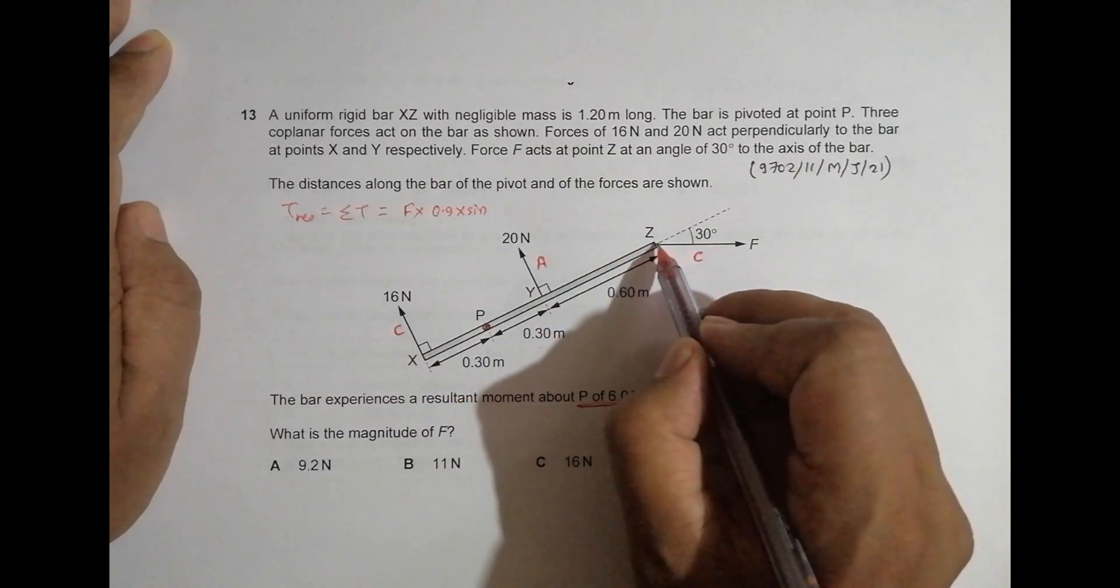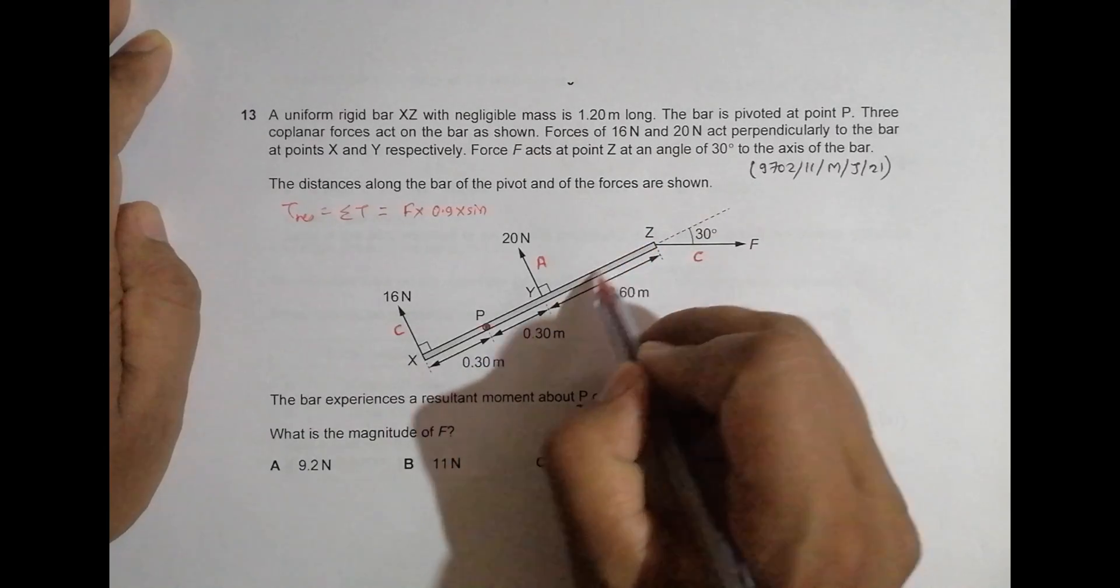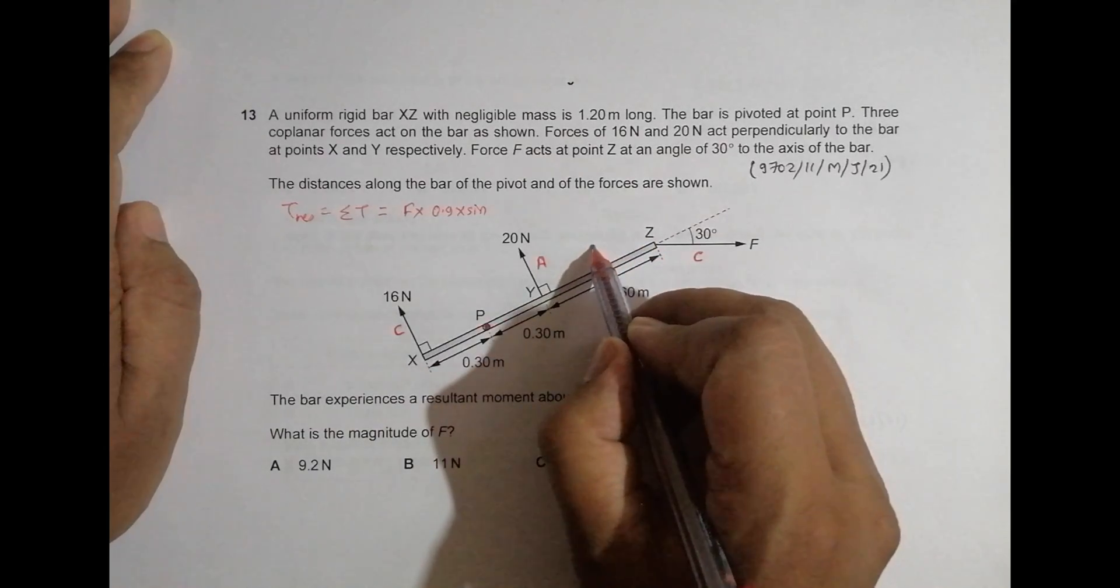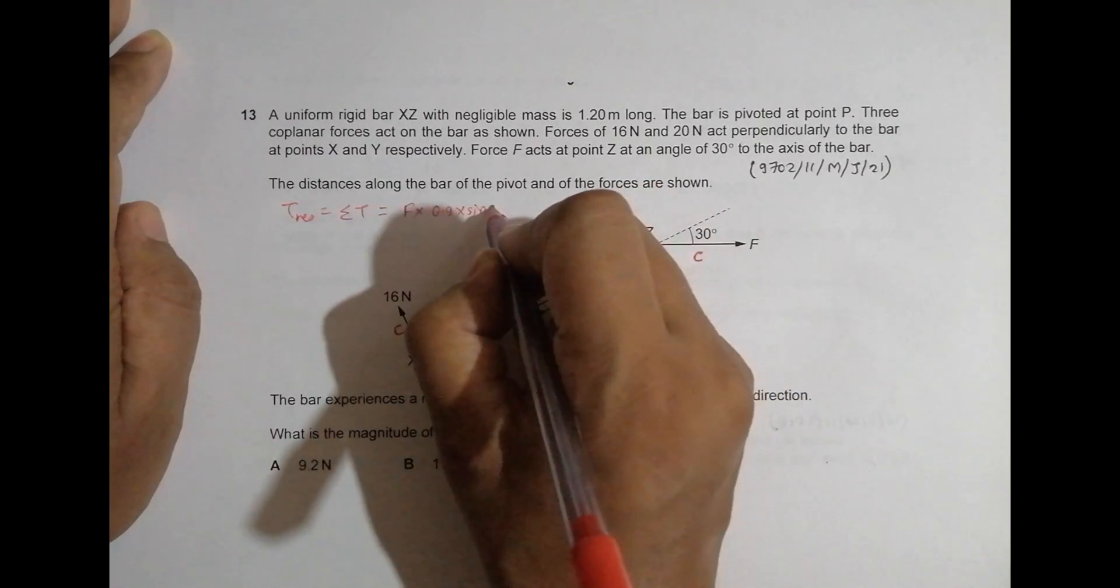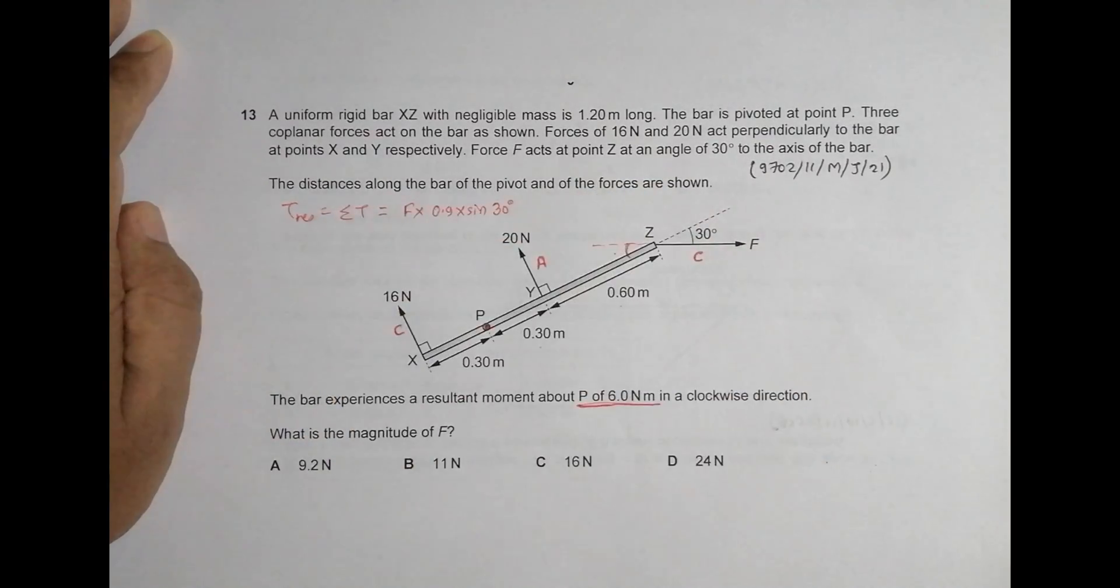So the angle here should be the least angle here which is equal to this, this is 30 degrees, so it is 30 degrees.